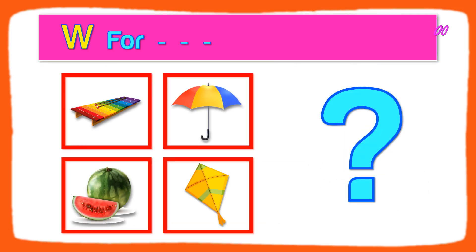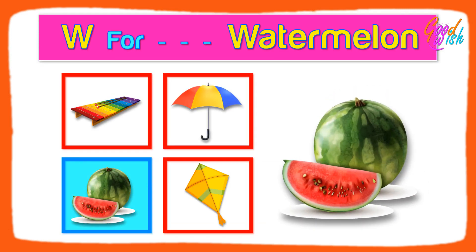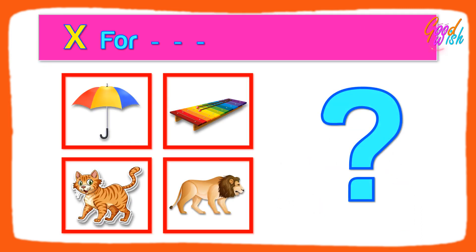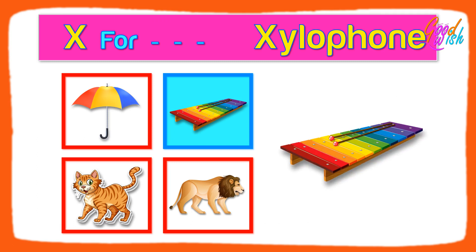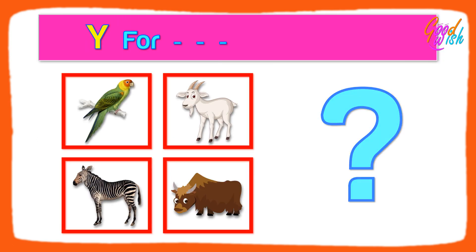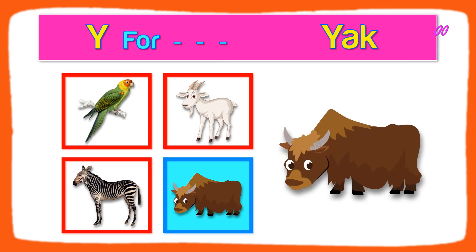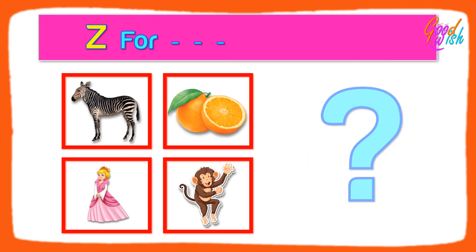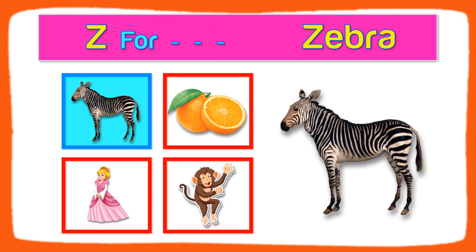W for Watermelon, X for Gyllophone, Y for Yuck, Z for Zebra.